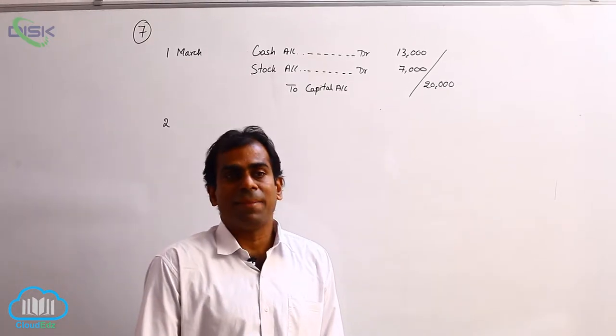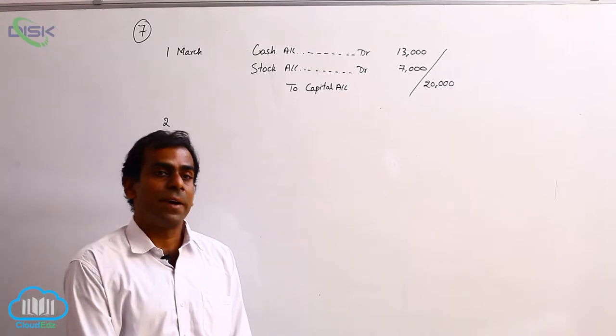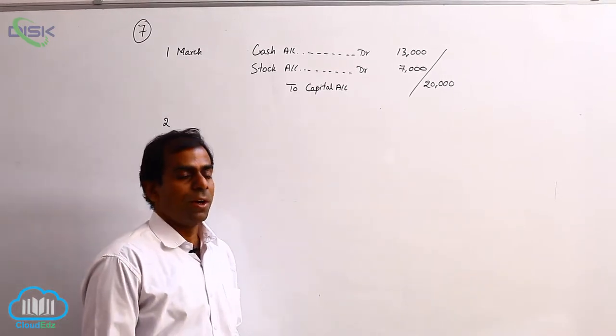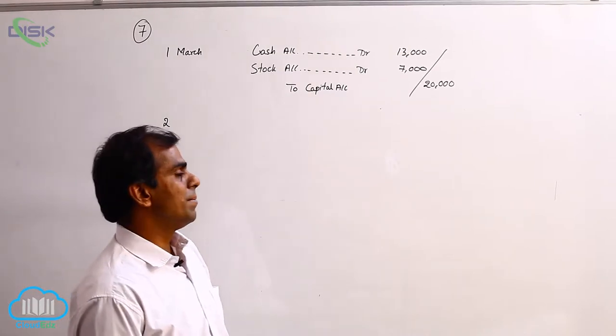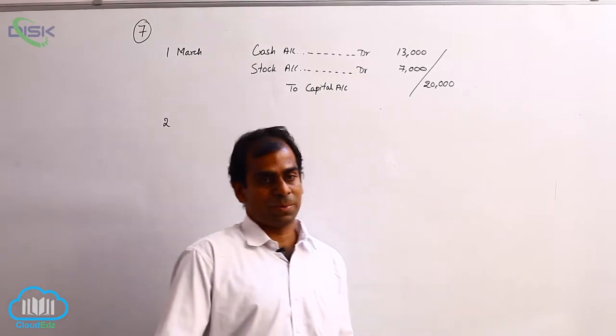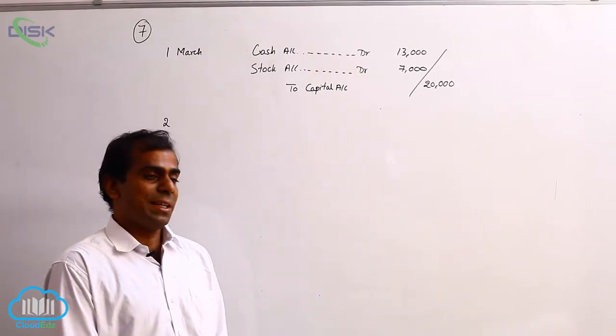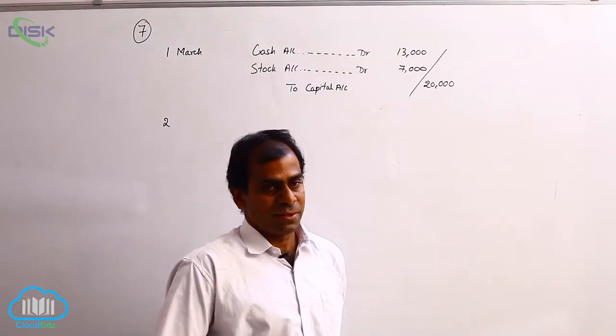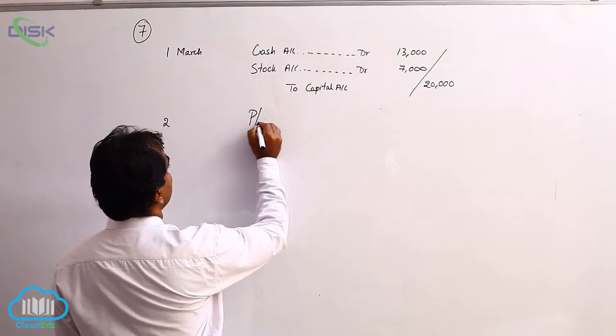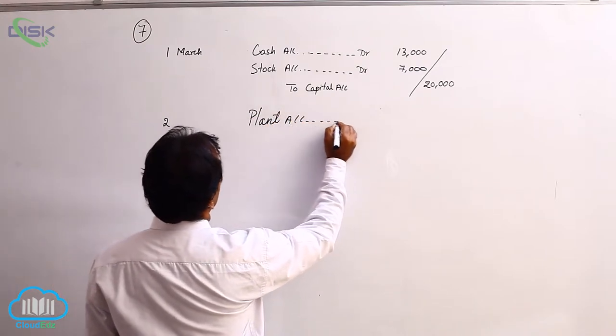On 2nd March, bought plant rupees 5000, indicating you have purchased machinery worth 5000. So machinery or plant is a real account because it is tangible. So when you buy machinery, real account comes in. That is why we debit plant being a real account and coming in. So we say plant account debit.